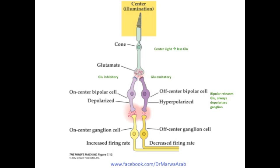To review: the on-center bipolar cell and the off-center bipolar cell have different effects when it comes to the glutamate being released. Glutamate has an inhibitory effect on the on-center bipolar cell and an excitatory effect on the off-center bipolar cell. When light illuminates a photoreceptor that's typically releasing glutamate constantly, stimulation causes hyperpolarization and less glutamate is released. If the next cell is an on-center bipolar cell, this reduction in glutamate leads to depolarization, more glutamate released onto the on-center ganglion cell, which is excited, therefore depolarized, increasing its firing rate and leading to more action potentials sent to the brain.